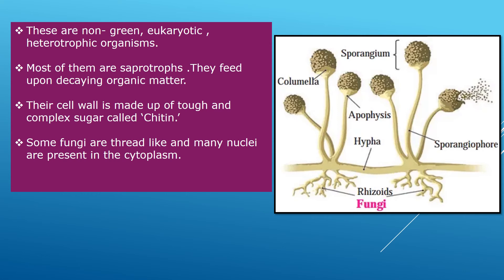Fungi are non-green, eukaryotic, heterotrophic organisms — eukaryotic means having a nucleus with bound cell organelles and complex structure; heterotrophic means they depend on other living organisms for food. They are also saprophytes, depending on dead organisms for food. Fungi have a cell wall made of chitin — a tough and complex sugar. A thread-like structure is present, with many nuclei present in the cytoplasm.